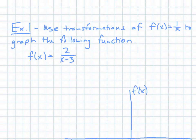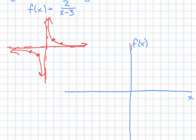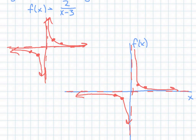Now let's try to graph some of these using transformations of the parent function 1/x. For 1/x, your asymptotes are at x = 0 and y = 0. When you plug in 1 you get 1, plug in 2 you get 1/2, plug in negative 1 you get negative 1, plug in negative 2 you get negative 1/2. Notice that your graphs are always approaching the asymptotes.